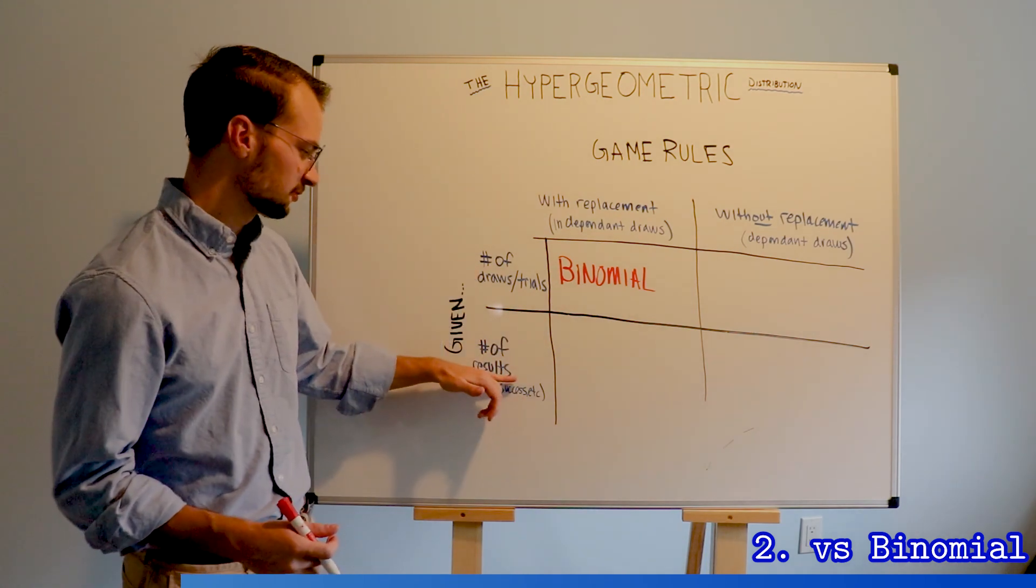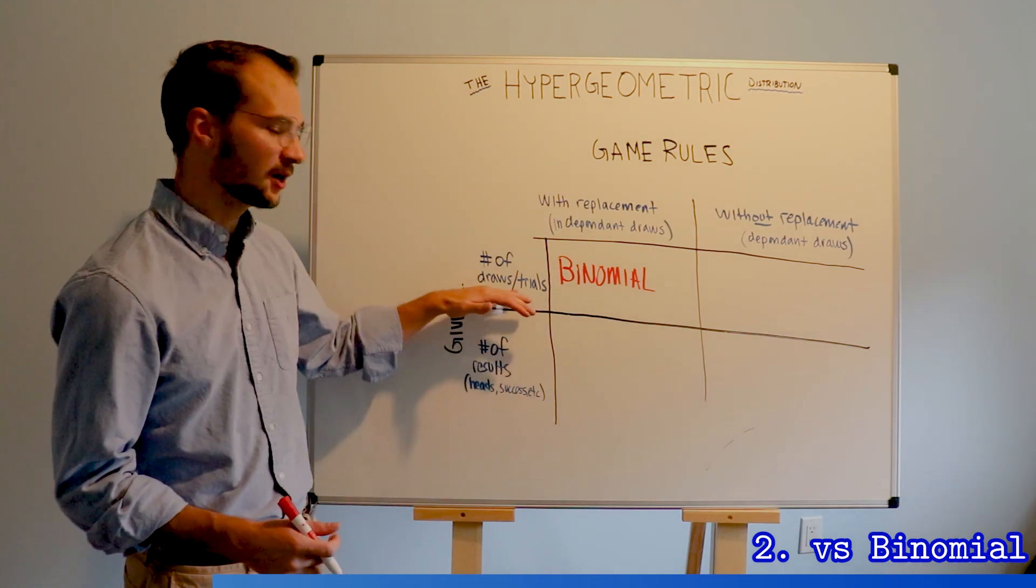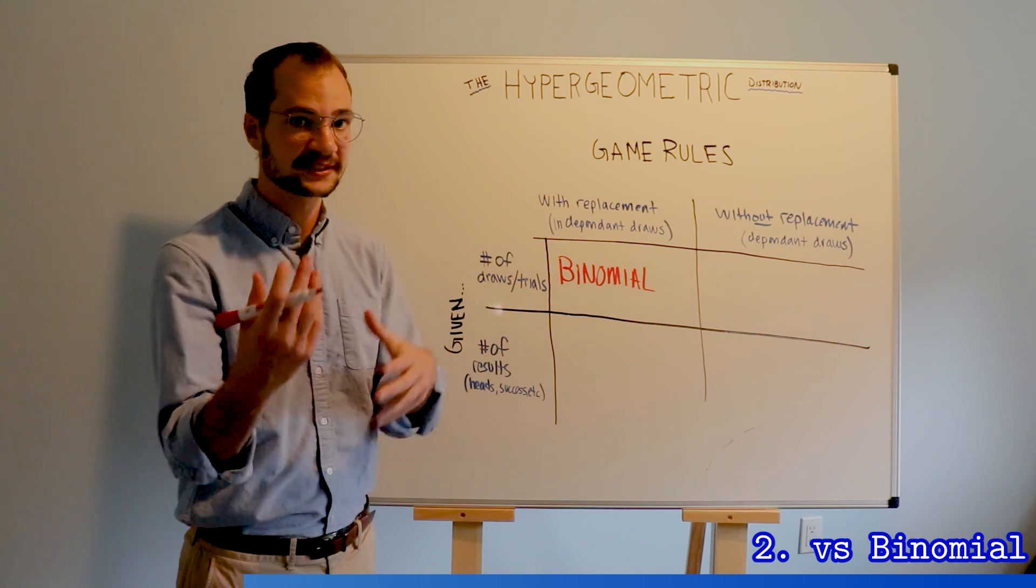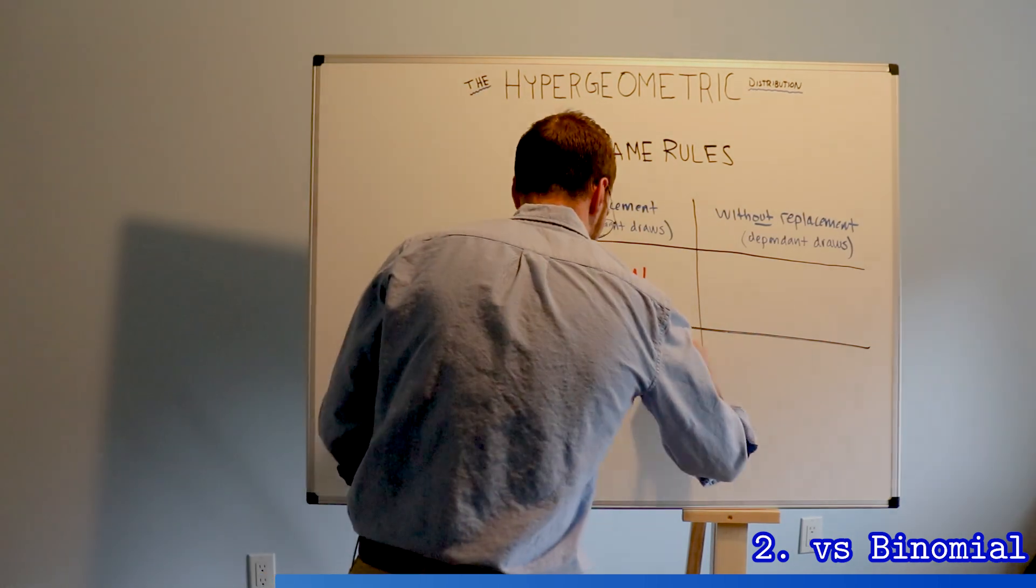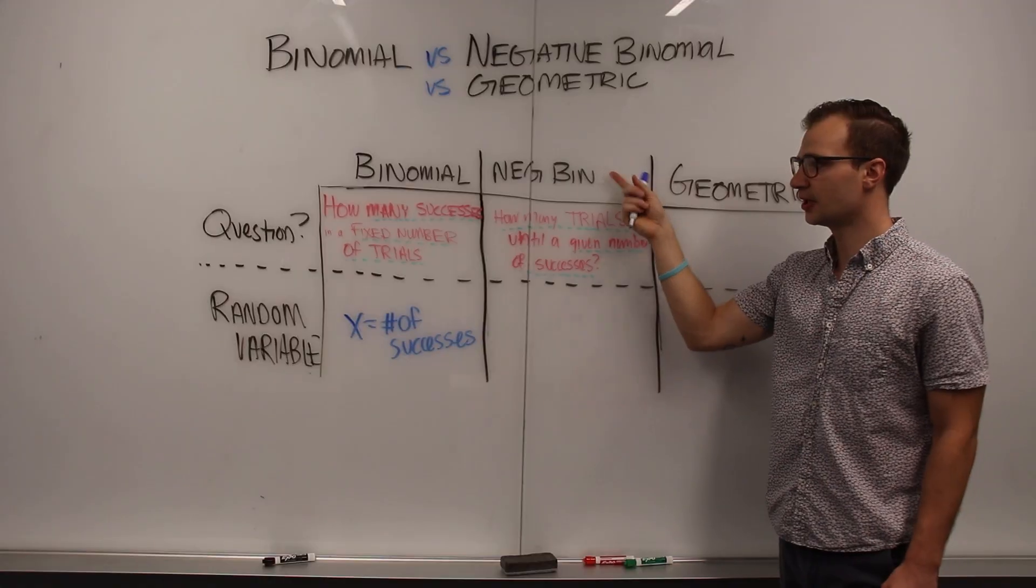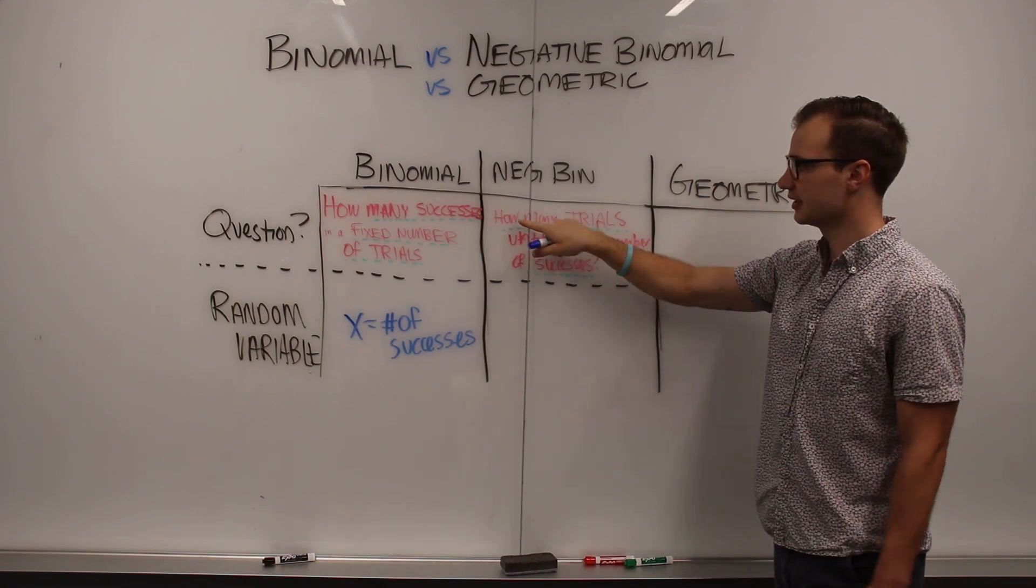On the other hand, if we're given the number of results we want and need to know how many draws, that is the negative binomial. If this is unfamiliar to you, check out my video on this topic exclusively.